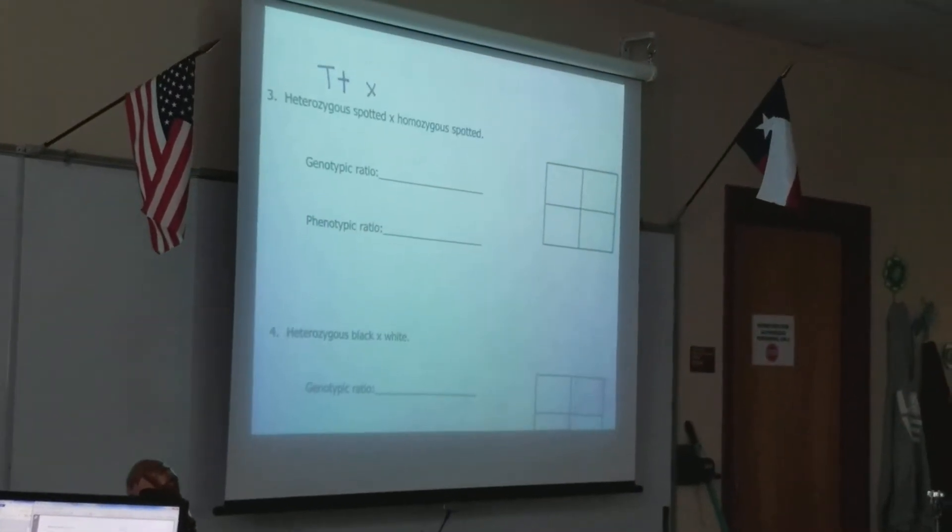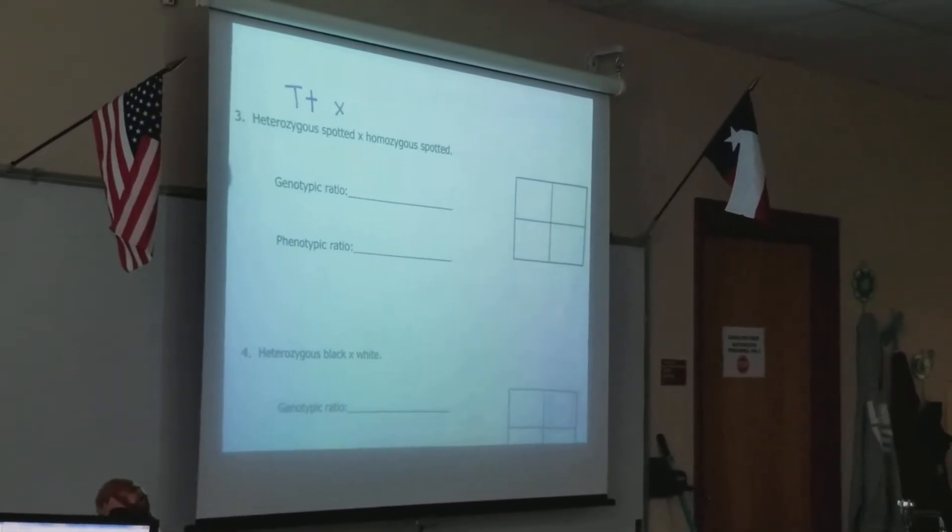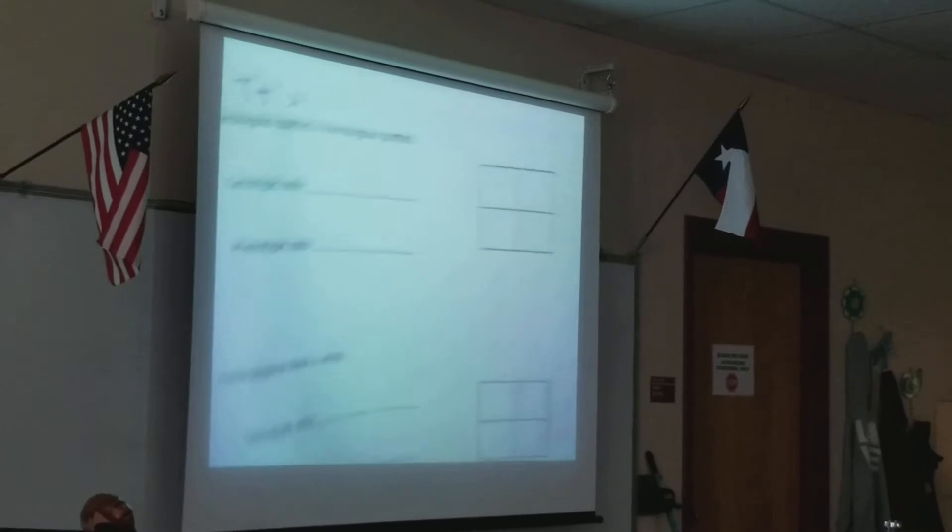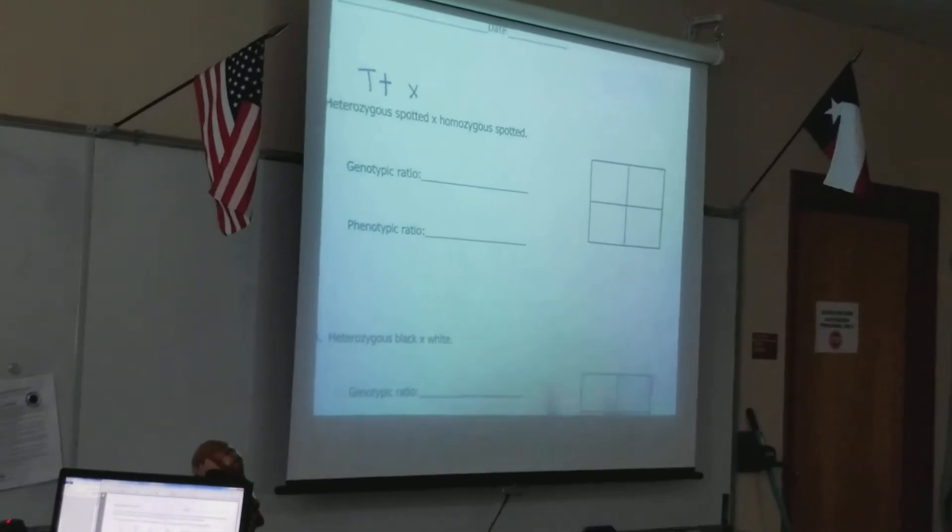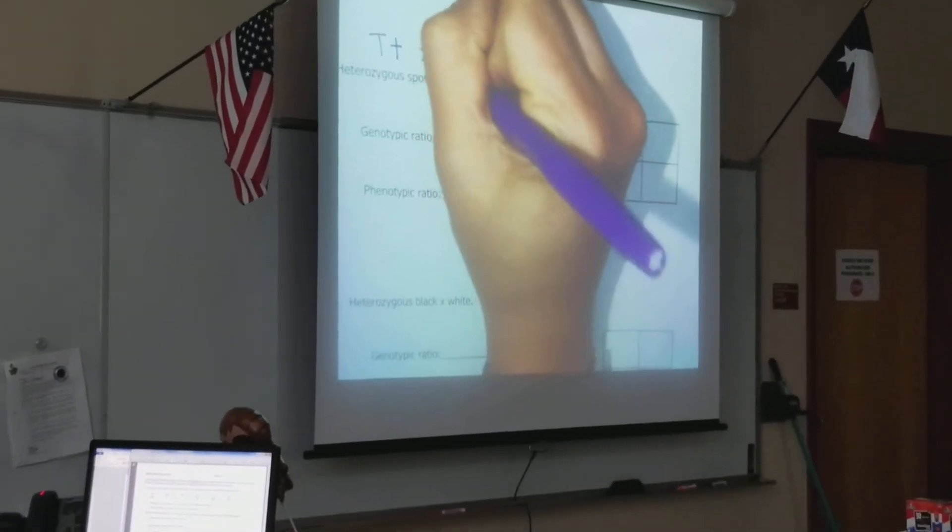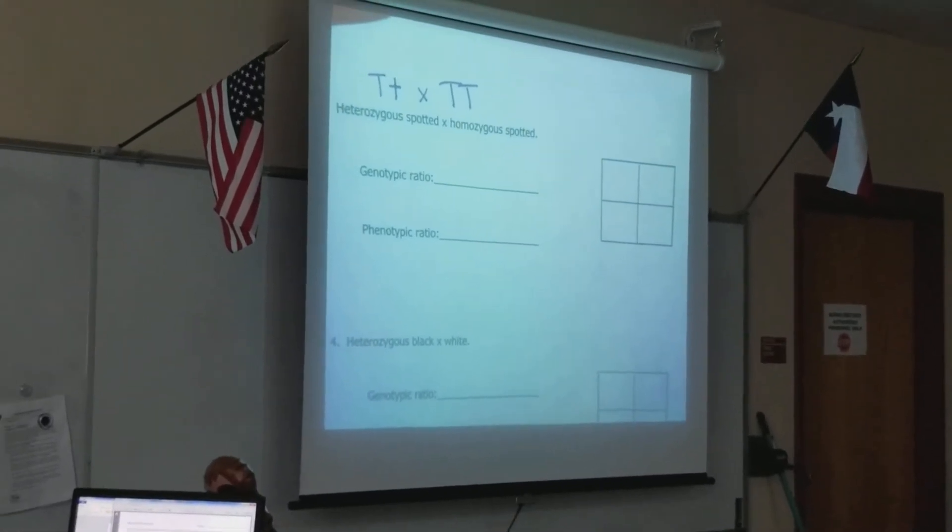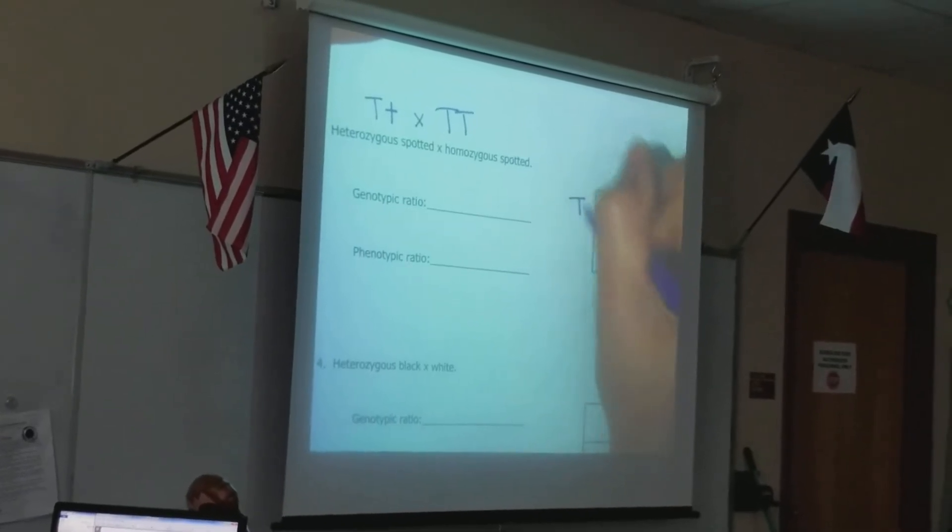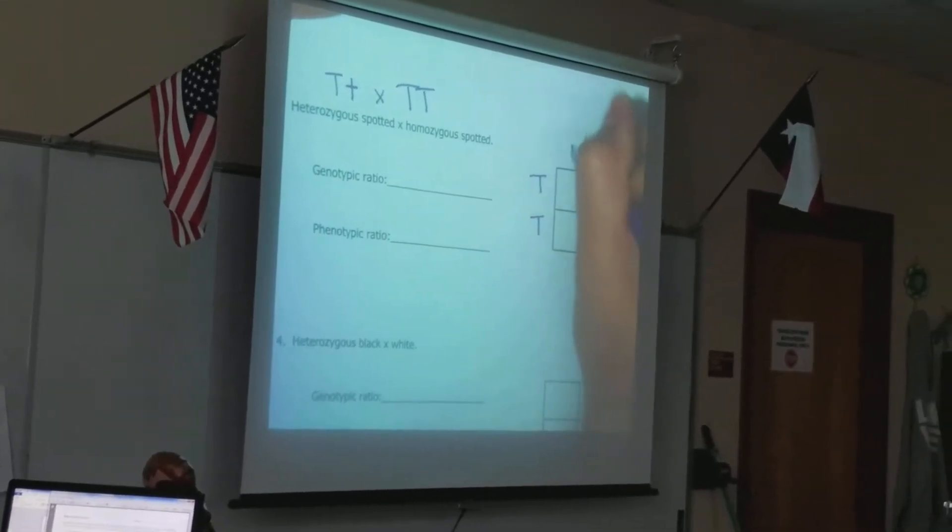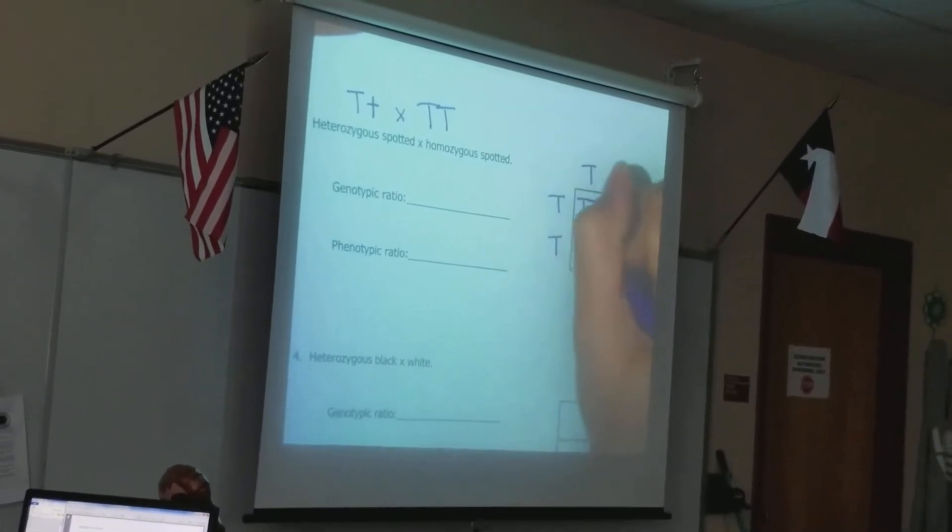So now that we know that genotype, we cross it with homozygous spotted. Once again, spotted is dominant or recessive? Dominant, because it was represented with a capital letter. So spotted is dominant. And since it's homozygous, they both have to be capital letters because they have to be the same. Okay, so now that you have your two genotypes, you use your law of segregation. You put one parent on the left, the other parent across the top, and you distribute your alleles.